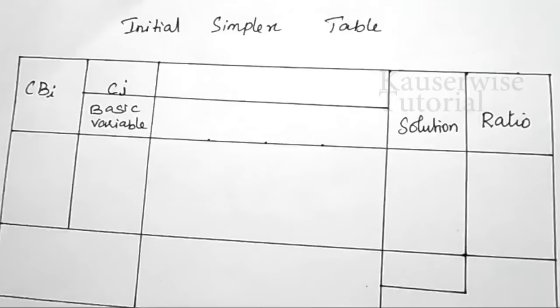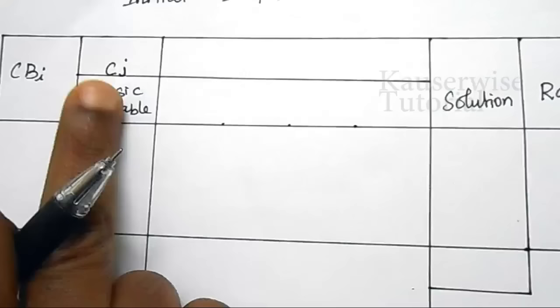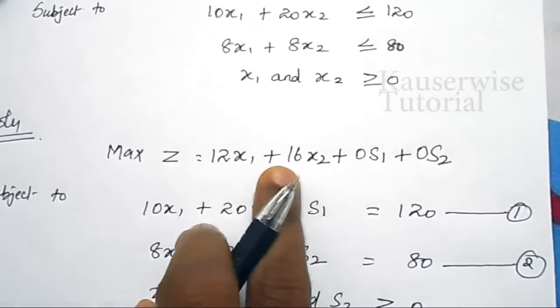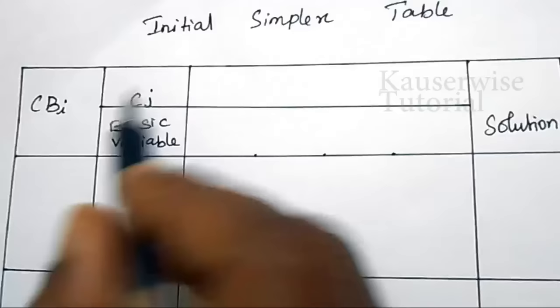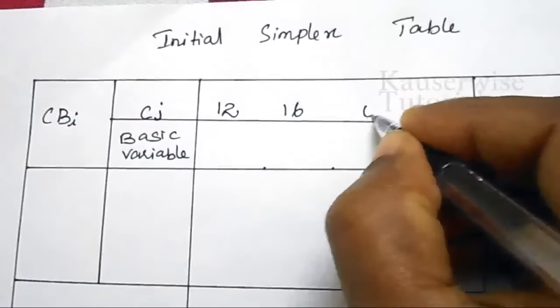This is the format of the initial simplex table. cbi is the cost of basic variables, and there is a solution column and a ratio column. cj refers to the coefficient of the objective function. So the coefficients are: for x1 it is 12, for x2 it is 16, for s1 it is 0, and for s2 it is 0. These are the coefficients of the objective function.